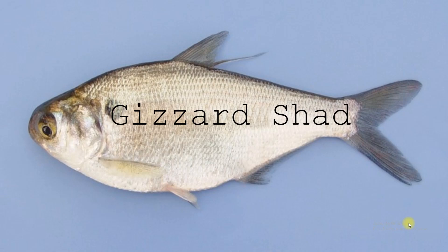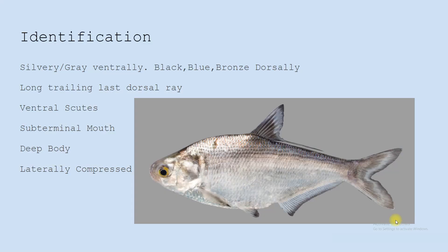Today I'll be presenting the biology and vascularization of the gizzard shad, a common baitfish in the United States. For quick ID, it has that silvery gray color that a lot of baitfish have. It's black and blue dorsally usually, and if the water is a little off color, it might get a bronze look.